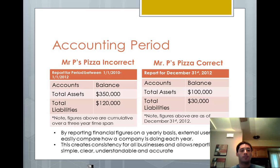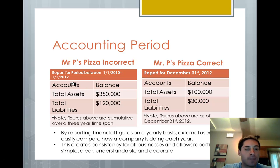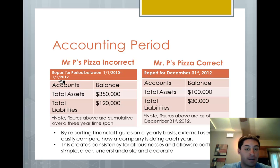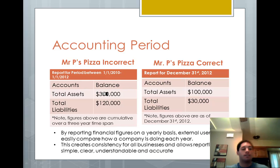So, split screen, side by side — the table on the left is incorrect, the table on the right is correct. Let's take a look at why. This title shows that the financial figures here are for a period between January 1st, 2010 and January 1st, 2012 — so three years: 2010, 2011, and 2012. These figures are cumulative over a three-year time span, so their assets are going to be really high and their liabilities are probably going to be higher.